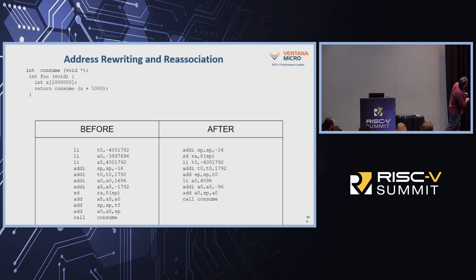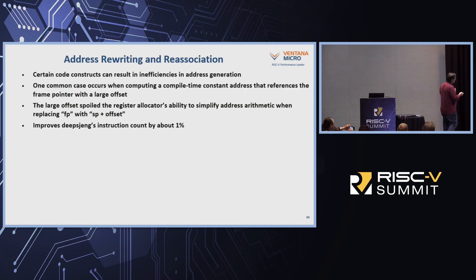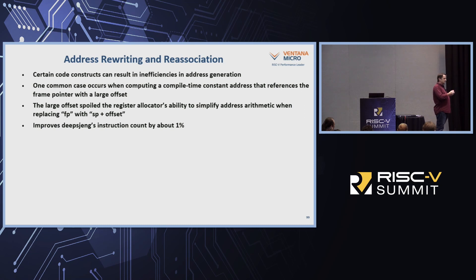You can see it's two or three instructions just to compute SP plus some big number. Fixing this is only about one line of code, but you've got to find the right place to fix it. What we found is this improves DeepSJENG by about one percent. You're hearing one percent, two percent — from a compiler writer's standpoint, consistently over a one-year period, you should expect about one percent from your compiler. If we're finding one percent here and one percent there, that is right in the realm of what we're looking for.